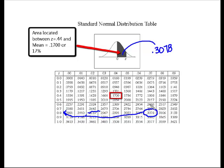0.87, that in a standard normal distribution, that 0.3078, or 30.78 percent of the data, falls plus or minus 0.87 standard deviations from the mean,